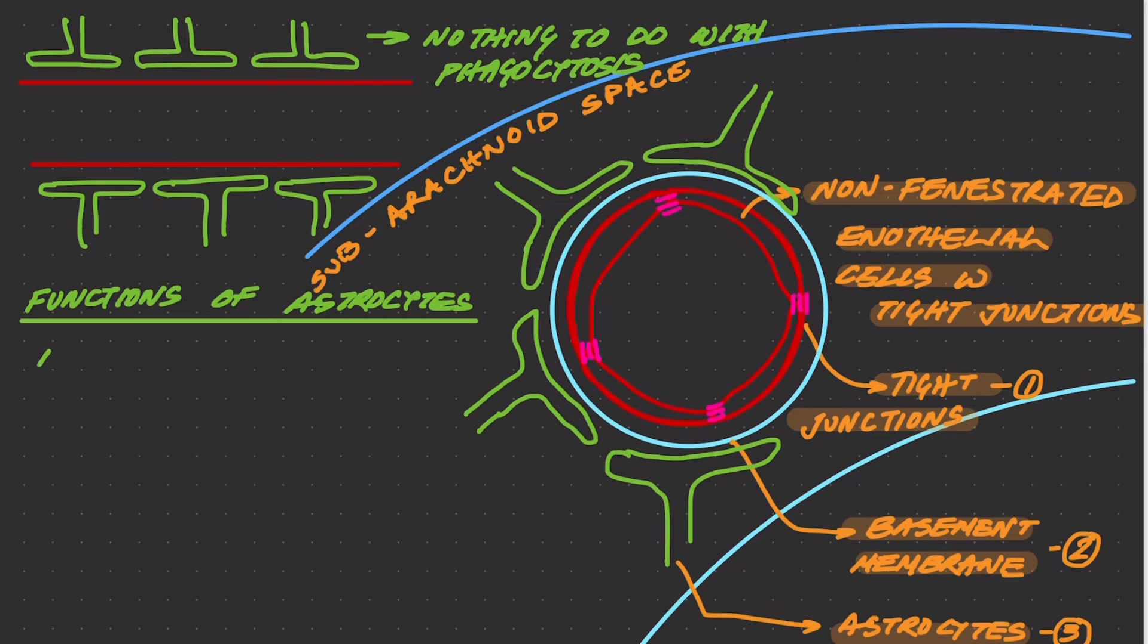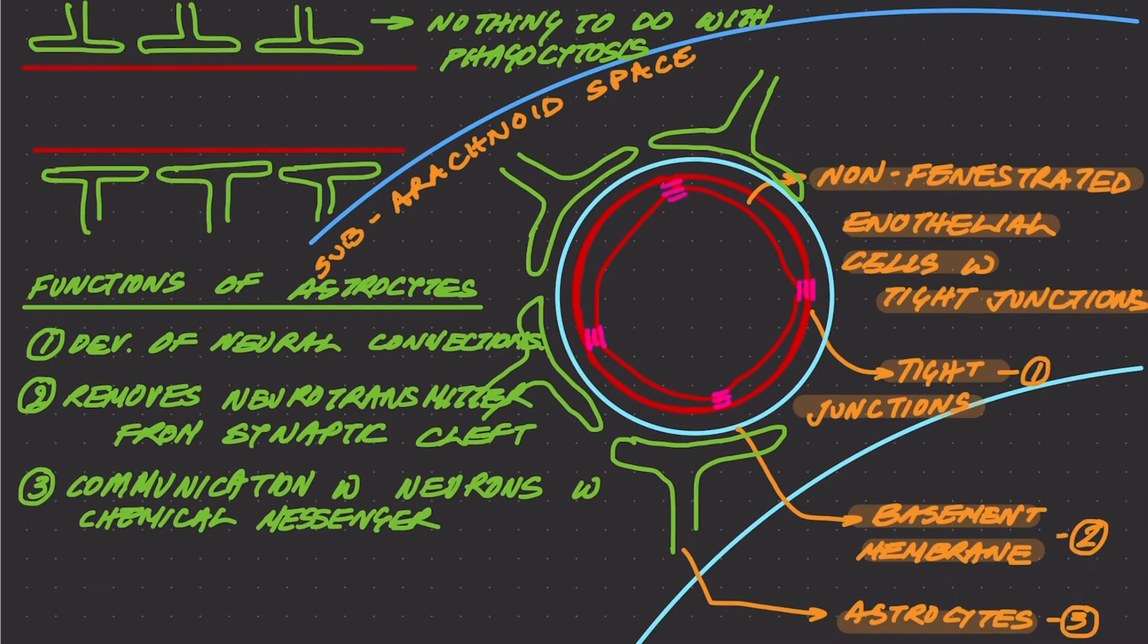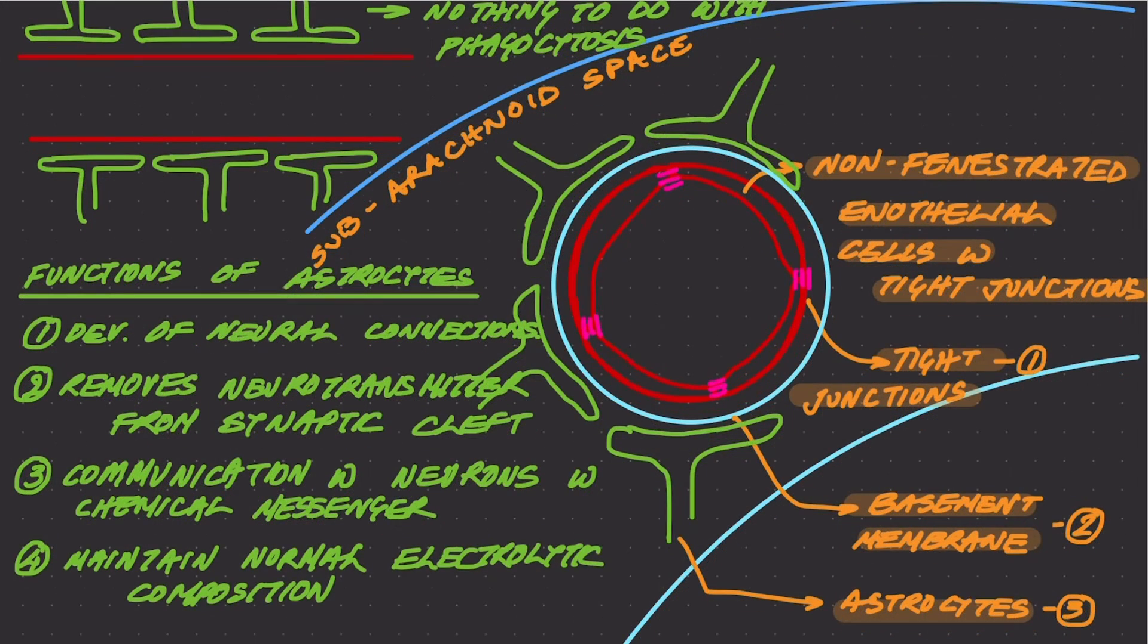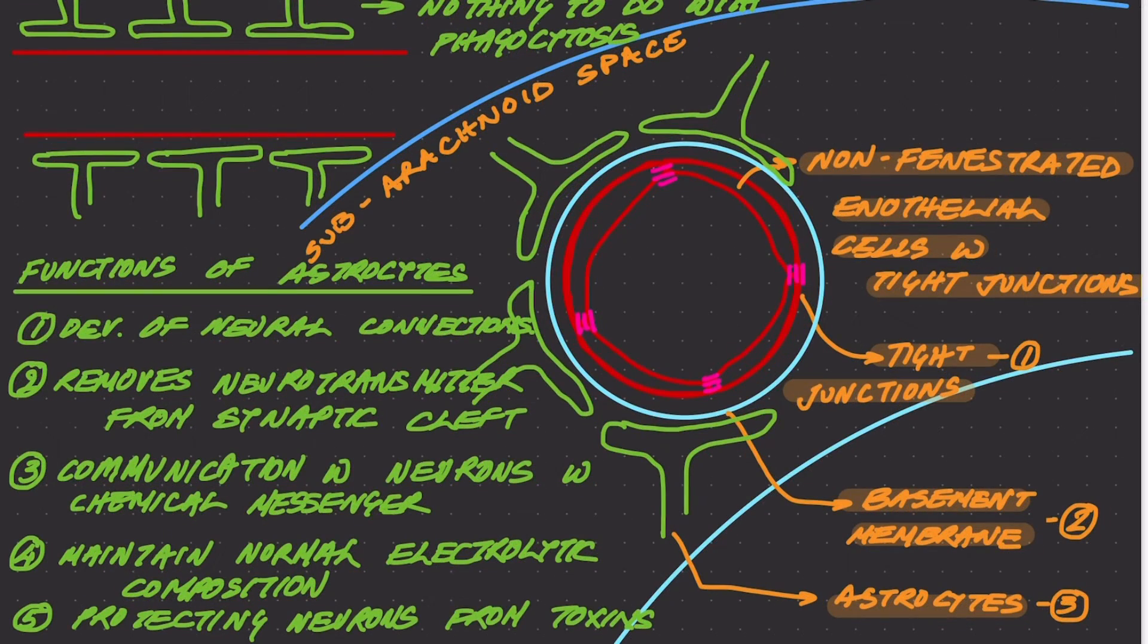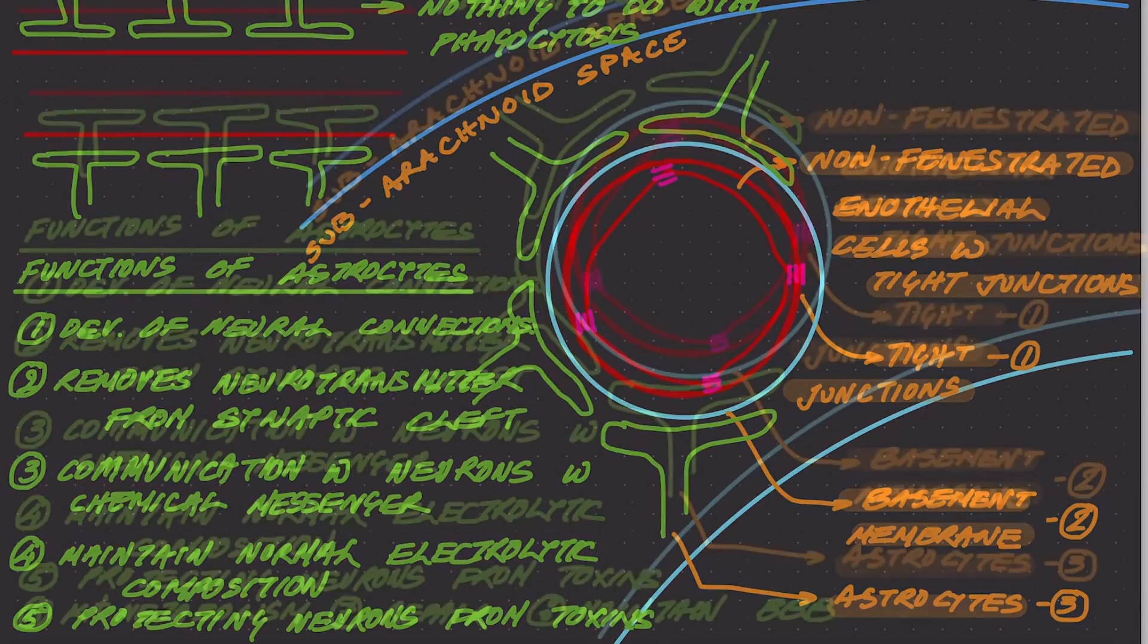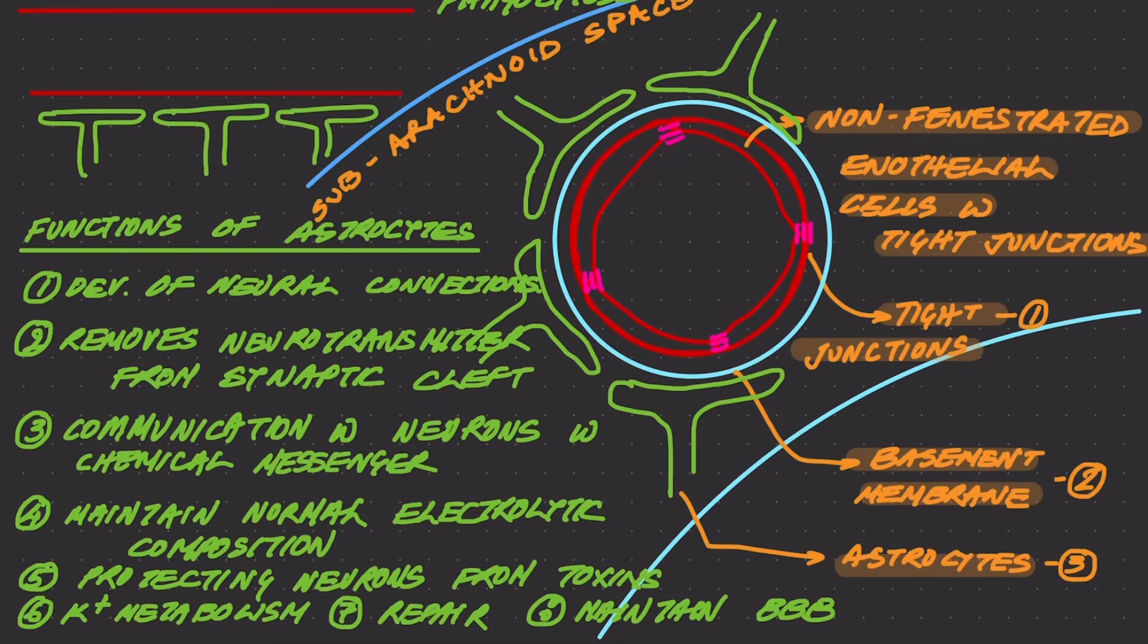Some of the functions of astrocytes are development of neural connections, removing neurotransmitters from synaptic cleft, communication with neurons with chemical messengers, maintaining normal electrolytic composition, protecting neurons from toxic substances, potassium metabolism repair, and maintaining the blood-brain barrier. It's a physical support in maintenance of the blood-brain barrier.